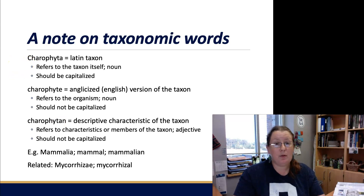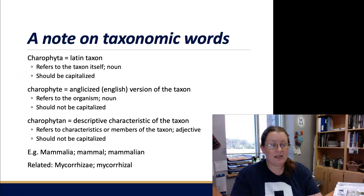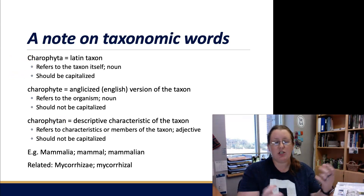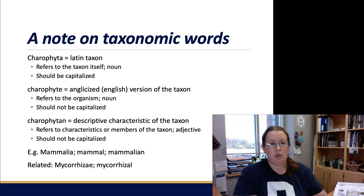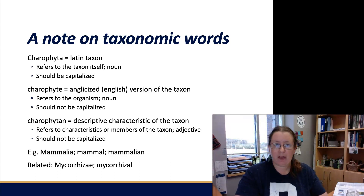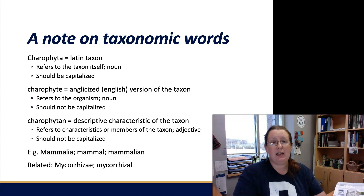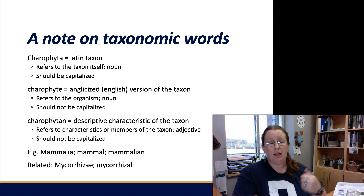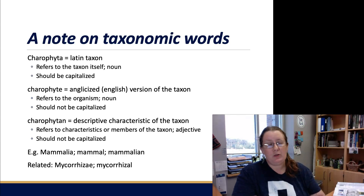Mammalia, mammal, mammalian is a good way to think about the relationship between these three words. You, as a human, are in the class Mammalia, which means that you are a mammal and have mammalian characteristics such as hair, being warm-blooded, and feeding one's offspring using milk.